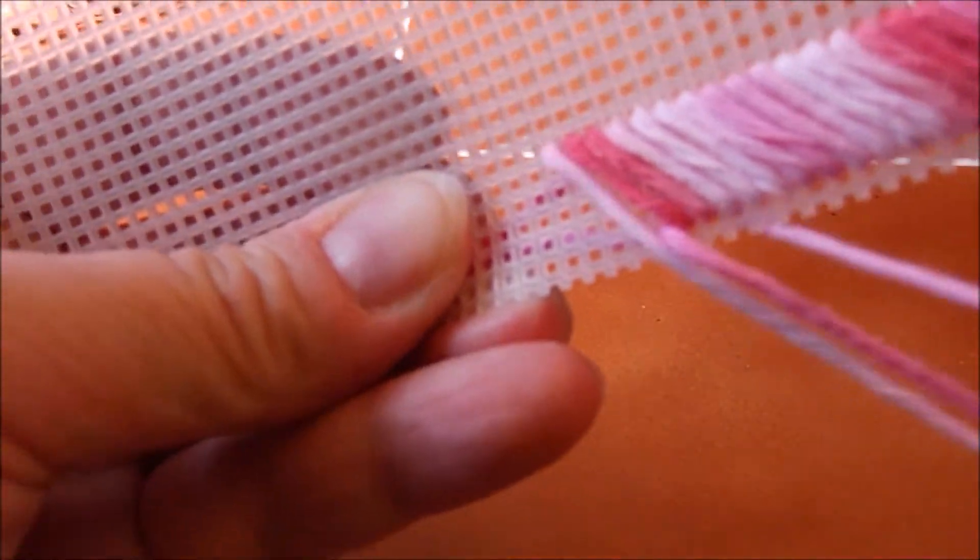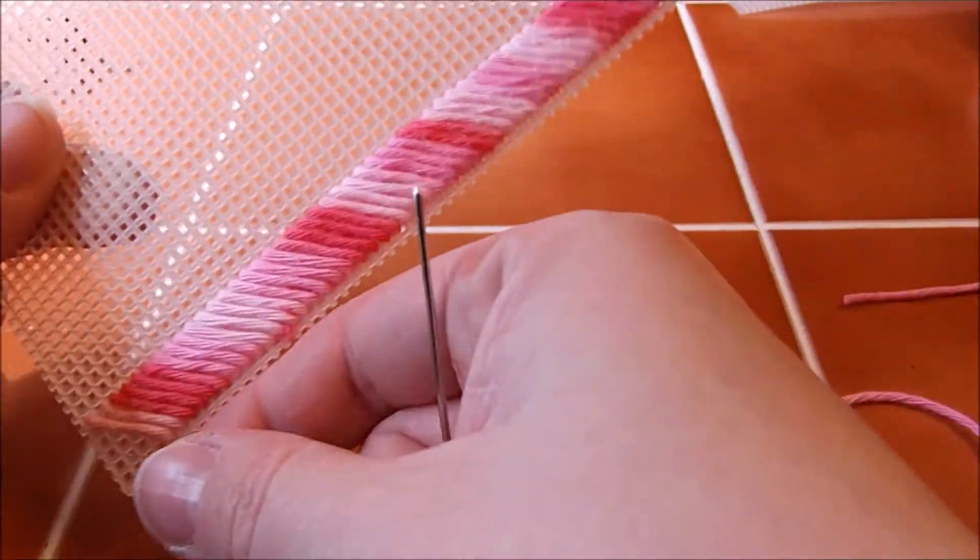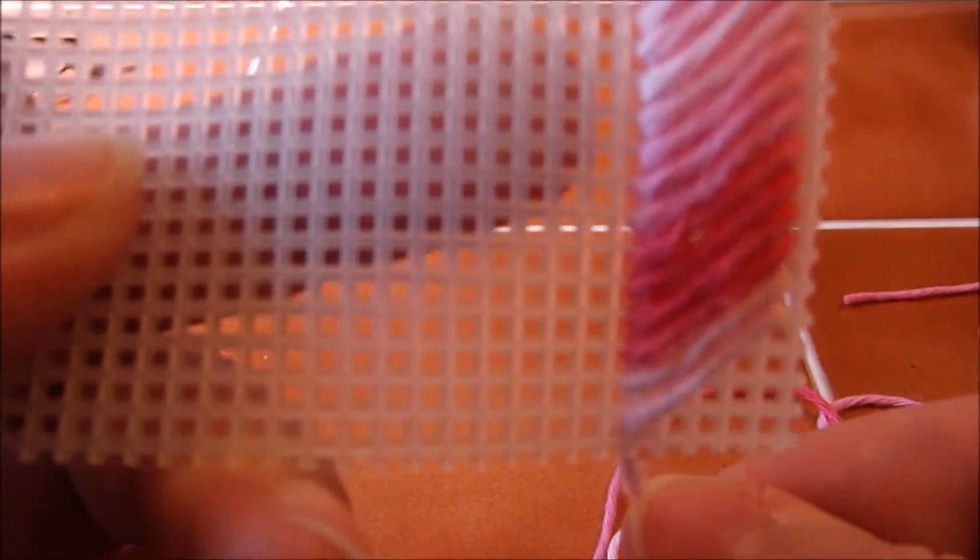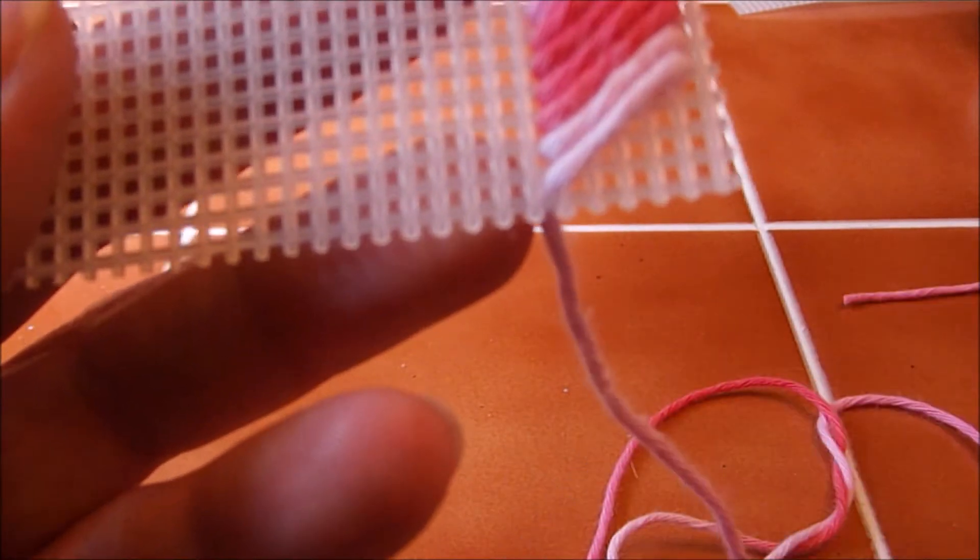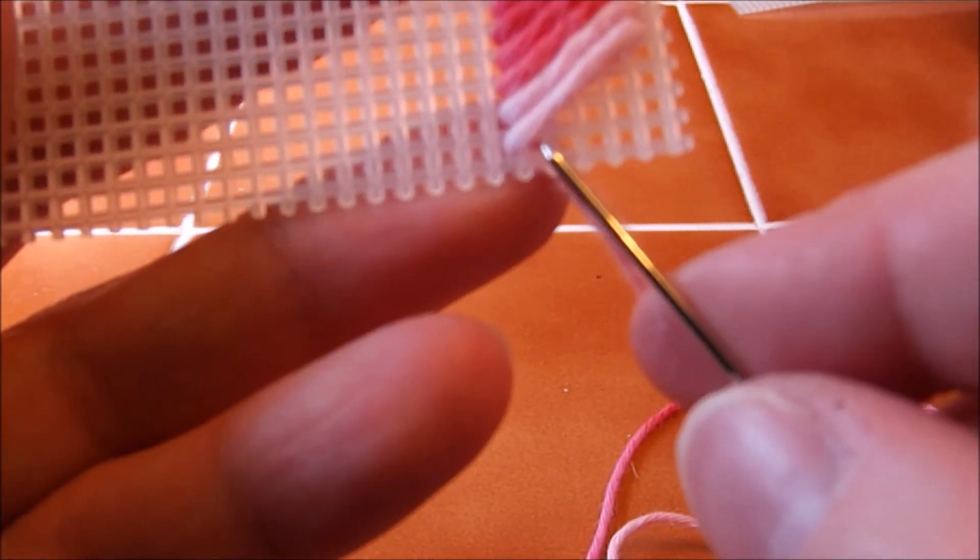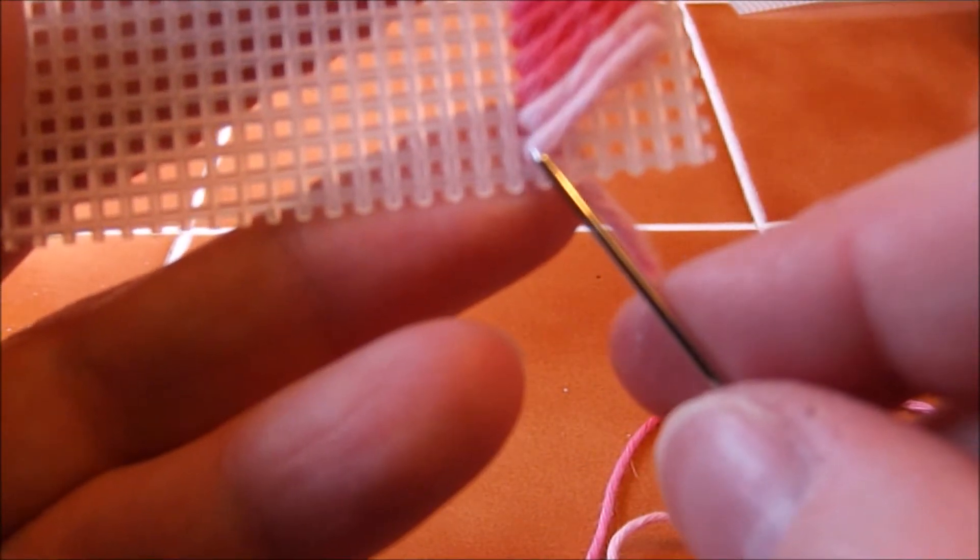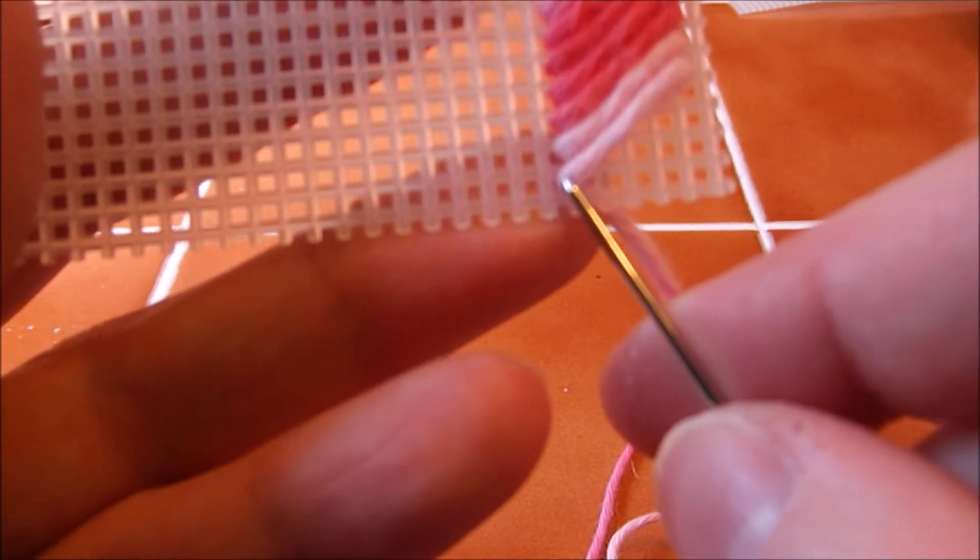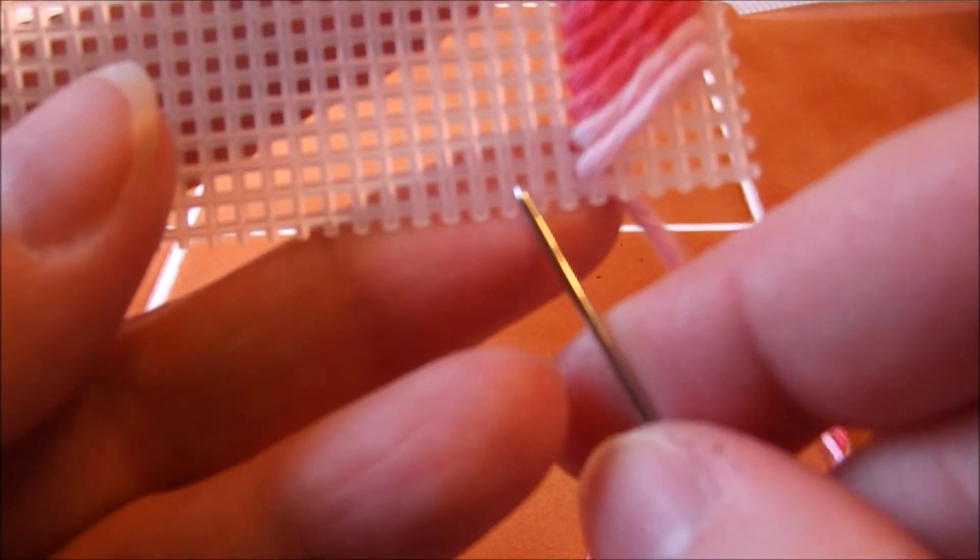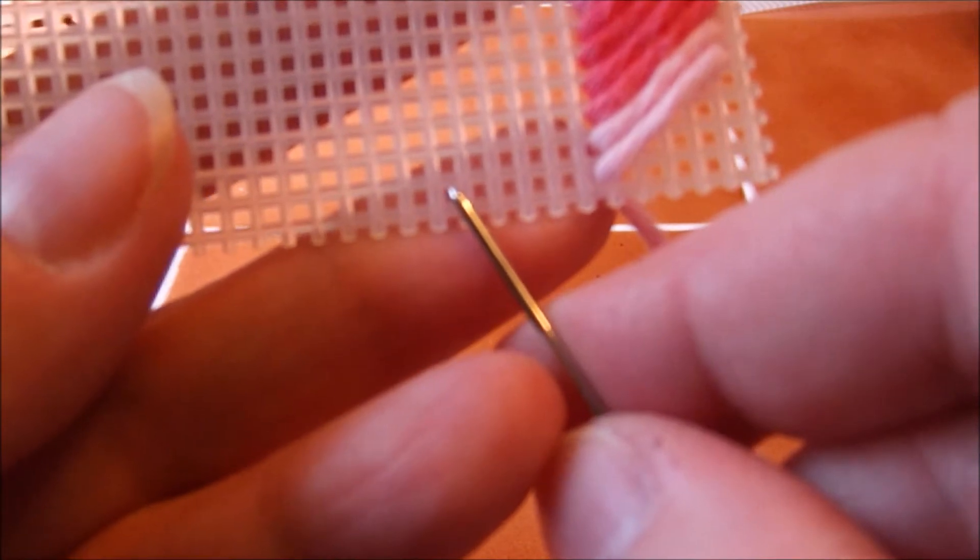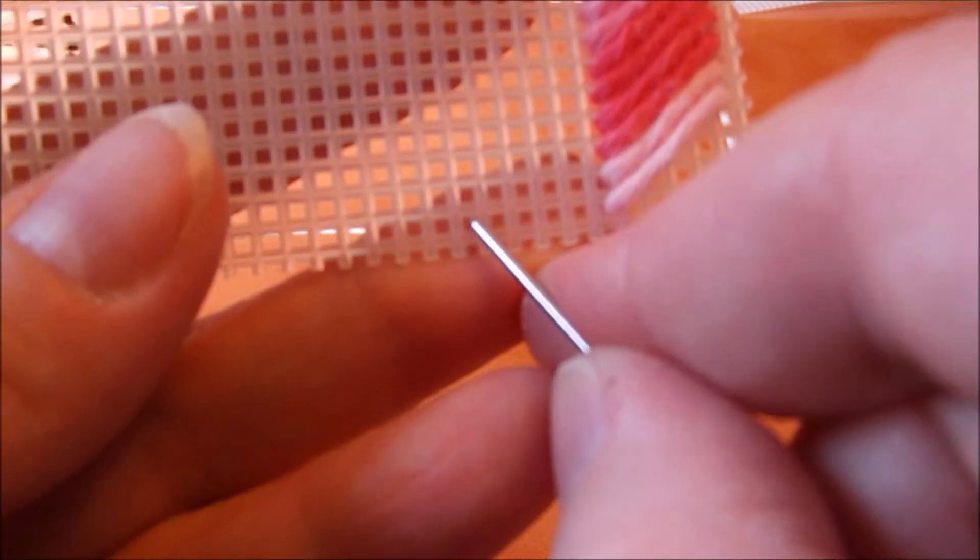And continue doing that until you reach the end of the row. I've got the first row done and came through in the middle there. So let's see if I can do this right. We want to count six over, counting the one that you're down in. So one, two, three, four, five, six. And then up five, counting this one.